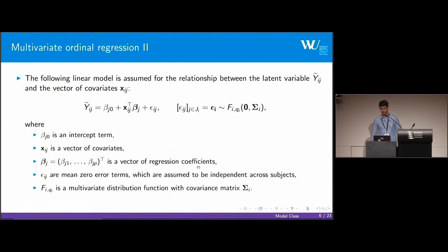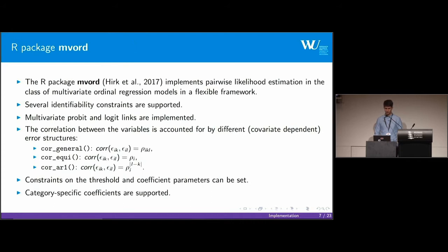For the latent process we assume the following linear model. So we have an intercept, the covariates and beta j. The regression coefficients are allowed to vary among the raters as well. And for the errors we assume to have a multivariate distribution with mean zero and some variance covariance matrix. We are able in our package to account for different error structures on this covariance matrix.